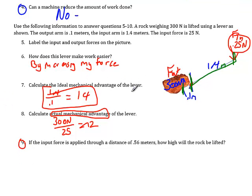This is to calculate the ideal mechanical advantage of the lever. Well, I took the input arm, 1.4, divided by the output arm, 0.1, and that equals 14. There is no unit. This tells me my force should get multiplied 14 times.